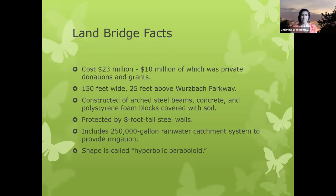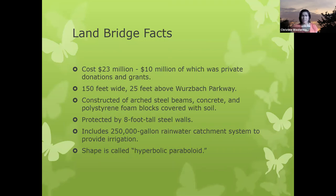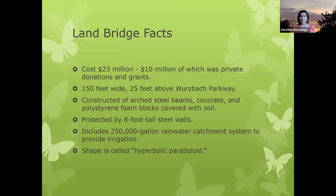The walls on either side are eight feet tall, and there is a 250,000 gallon rainwater catchment system associated with the bridge. Rainwater running down the sides of the bridge is caught and stored in a collection tank, and that water is used for irrigation — especially now since last winter when they've been establishing the plants on the bridge. Even with native plants well adapted to the area, you normally have to provide some irrigation for the first couple of years. That system will still be available if there's a bad drought or when replanting and supplementing the vegetation.